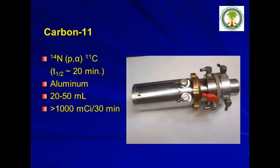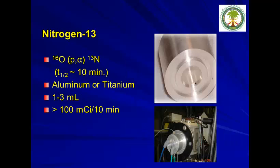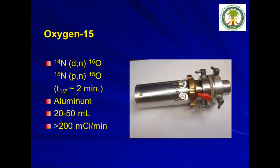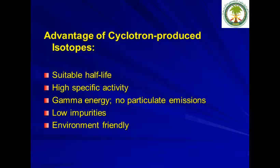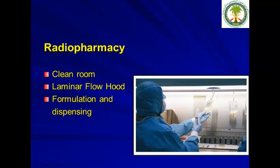Similar specifications apply to carbon-11 targets regarding target body and production rate, as well as for ammonia and oxygen-15 production. The clear advantages of using cyclotron-produced isotopes include: suitable half-life, high specific activity, gamma energy with no particulate emission, low impurities, and being more environmentally friendly than reactor-based production.